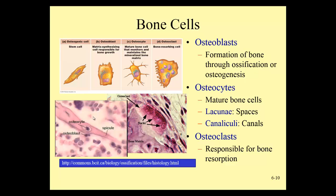Looking at this bone tissue, we can see bone being formed here, shown in pink — it's newly formed bone called a spicule, which is woven bone early in its development. On the surface of that bone is an osteoblast actively secreting the bone matrix and binding it with calcium. As that matrix hardens and completely surrounds the osteoblast, it becomes an osteocyte — trapped in a cavity called a lacuna. The space around an osteocyte is a cavity called a lacuna.